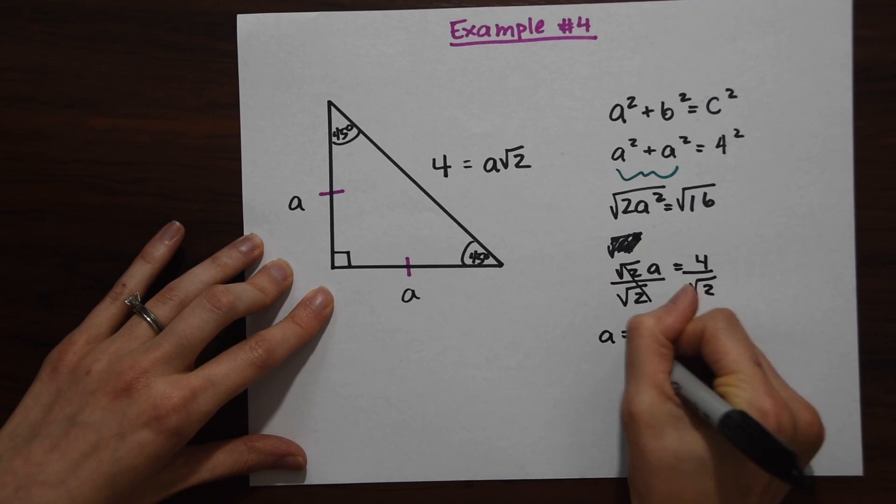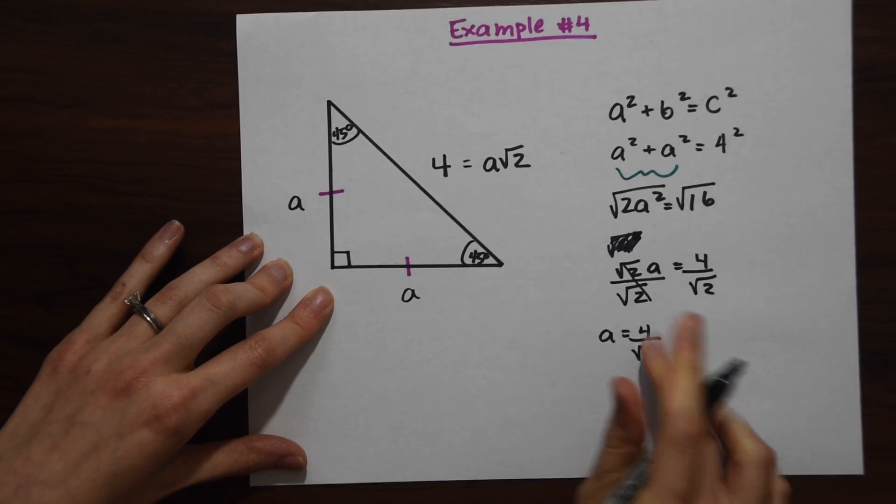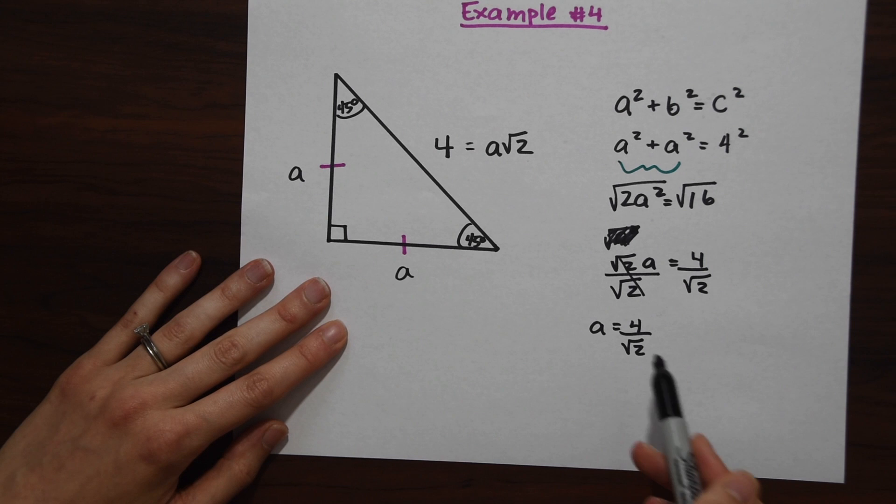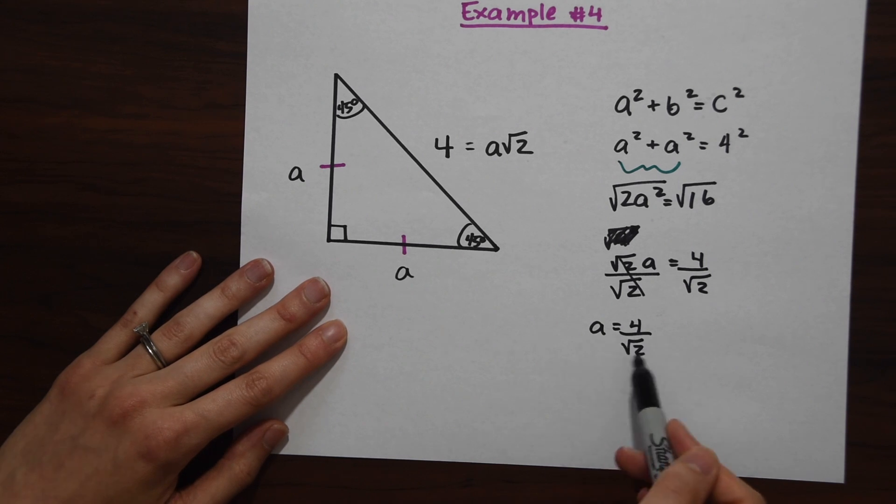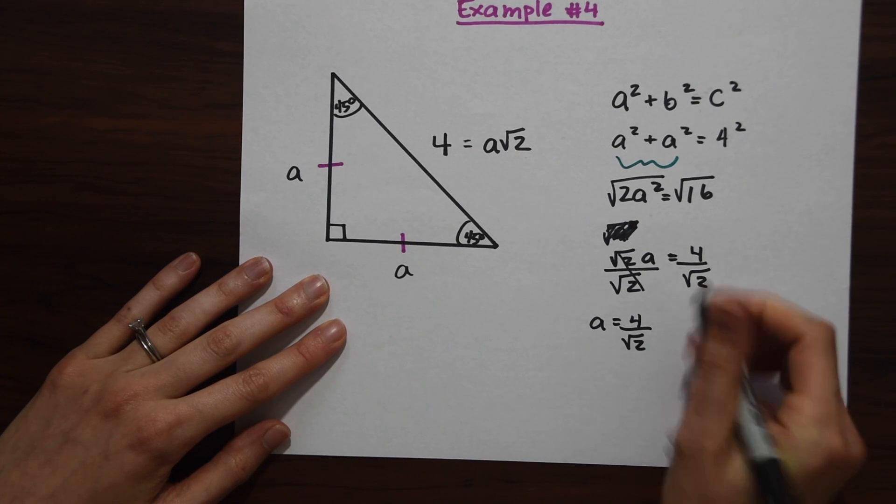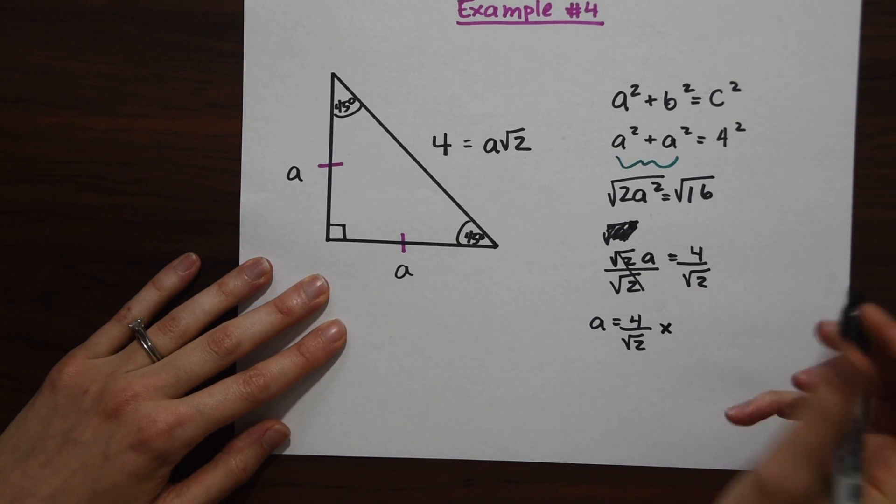When we do that, we get a equals 4 over radical 2. This is the answer, but a lot of teachers will want you to do something called rationalizing the denominator because we're not supposed to have a radical in the denominator. Let's get rid of this radical 2 down here by rationalizing. To do that, we're just going to multiply the numerator and denominator by radical 2, and this will get rid of our radical.